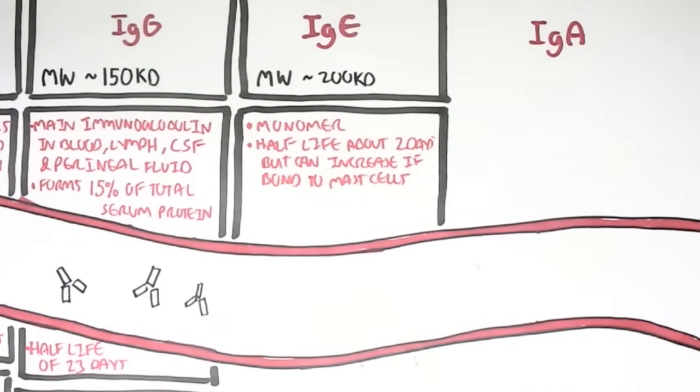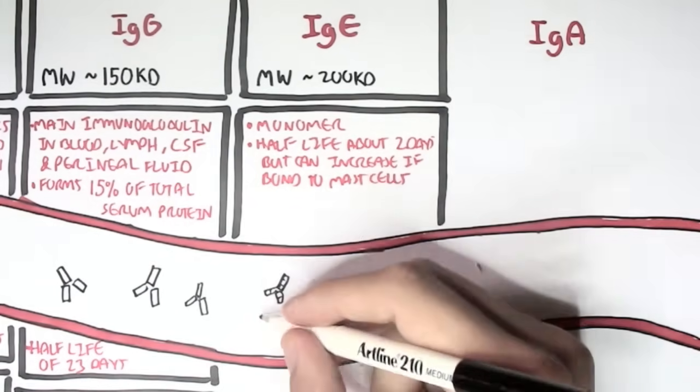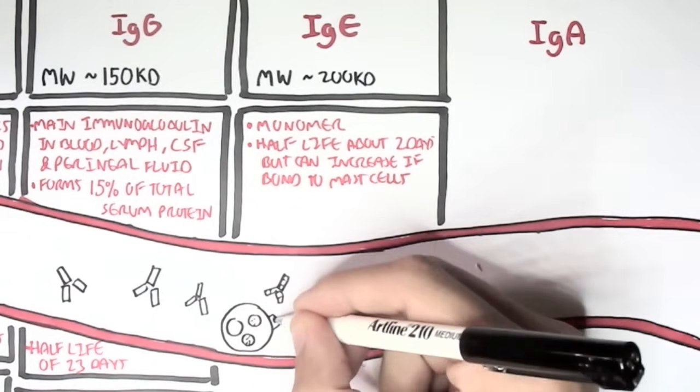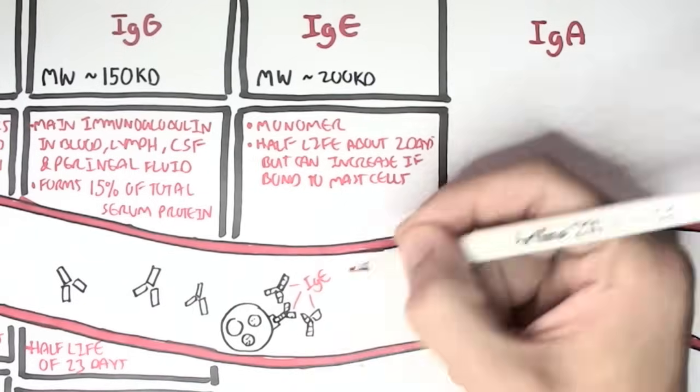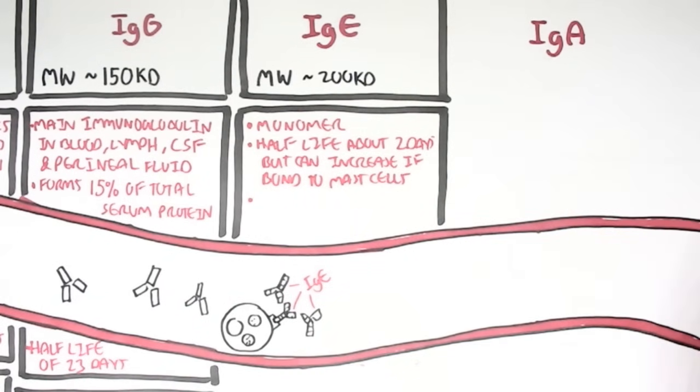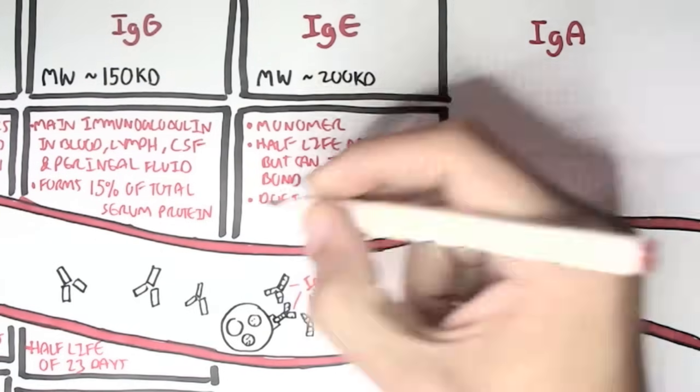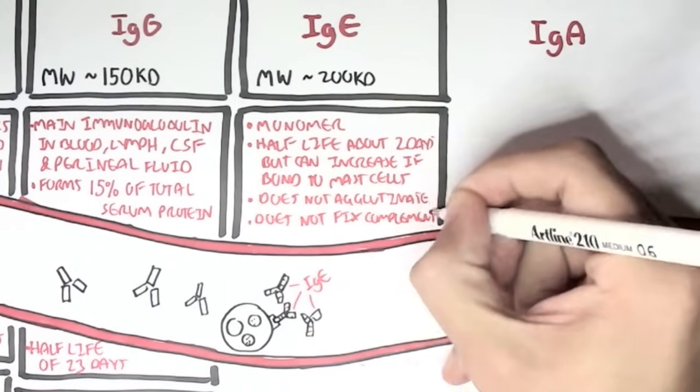So for example, here we have IgE antibodies in the bloodstream and here we have a mast cell. IgE, the FC portion, can bind onto receptors on the mast cells and this will increase the half-life of IgE. IgE, however, does not agglutinate and does not fix complement.